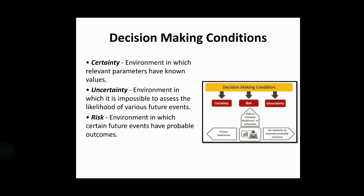In managerial decision making, there are three conditions. The first is decision making under certainty — an environment in which relevant parameters have known values. You know what the consequences are, whether a recession or calamity is going to happen, and you make plans accordingly.